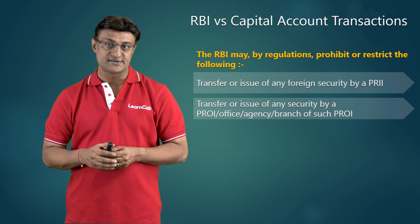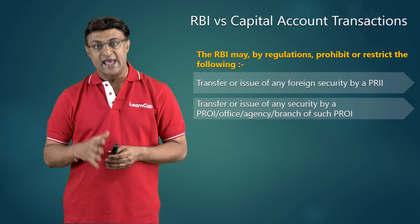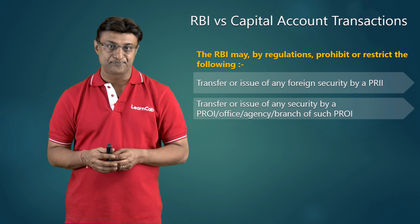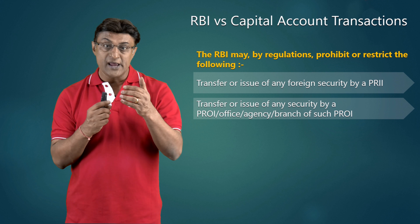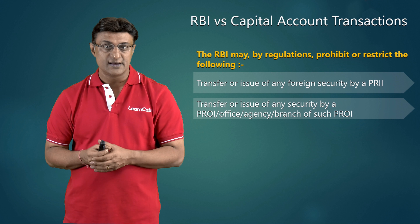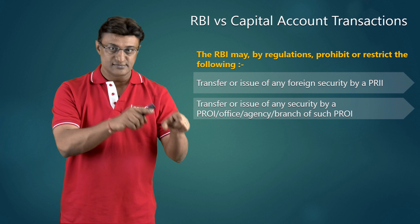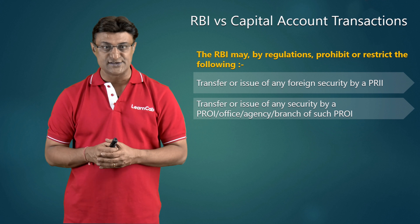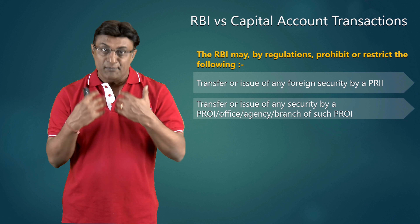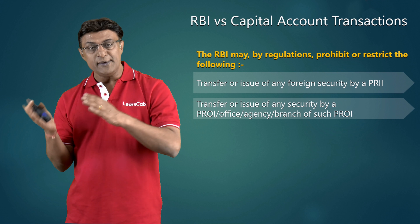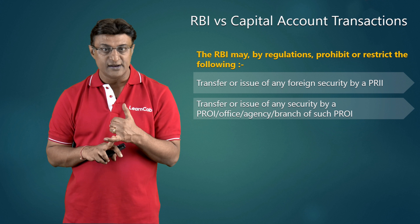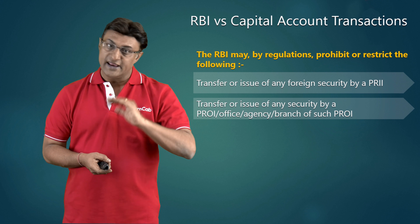A person resident in India has acquired a foreign security — shares, debentures, deposit receipts, etc. The RBI may, by regulations, prohibit or restrict this. The second is: transfer or issue of any foreign security by a person resident in India, or transfer or issue of any security by a person resident outside India or its office, agency, or branch.